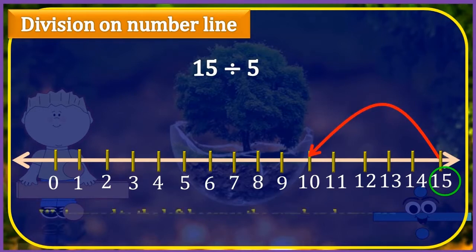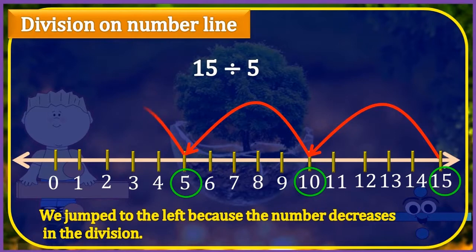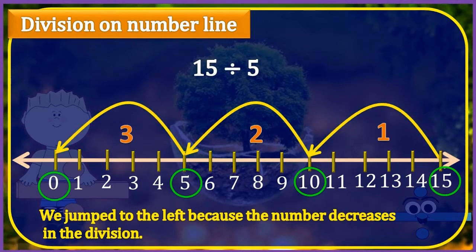We jump to the left because the number decreases in division. Look, we have reached 10 now. Skip again 5 numbers from here. We have reached 5 this time. Again, jump back by 5 numbers. Finally, we have reached 0. That means the division is done. Now counting the number of jumps, it is 3, which means that 15 can be divided into 3 groups of 5 numbers.